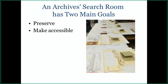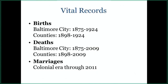This leads into our archives research room — we call it the search room when you're here in person, but the same principles extend online. We have two main goals: to preserve, and to make records accessible for your research. Preservation means controlling temperature in storage or scanning records to preserve the originals, and scanning also makes them accessible either in person or online.